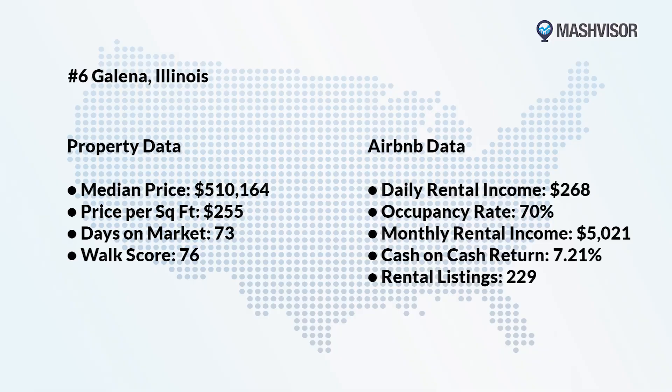Number 6: Galena, Illinois. Galena is a small town in northwest Illinois known for its well-preserved 19th century buildings, like the 1826 Dowling House. To the north of the town is a popular place for canoeing and fishing. In the analysis, it holds a high walk score for visitors, a solid Airbnb daily rate of $268, and a cash-on-cash return of 7.21%.